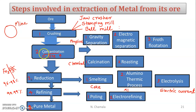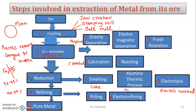After crushing, the next step is concentration — the process of removal of gangue or matrix from the ore. When we remove gangue and matrix, the ore percentage increases. Concentration is done by two methods: physical method (gravity separation, electromagnetic separation, froth flotation) and chemical method (calcination and roasting).